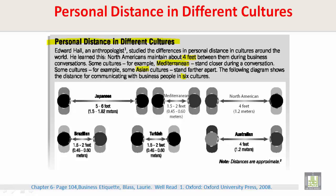In North America, the North American people is highlighted. They stand 4 feet or 1.2 meters apart. The Australian culture is also 4 feet and 1.2 meters apart. The Mediterranean cultures are 1.5 to 2 feet or 0.45 to 0.6 meters apart. Turkish cultures are 1.5 to 0.6 meters apart.